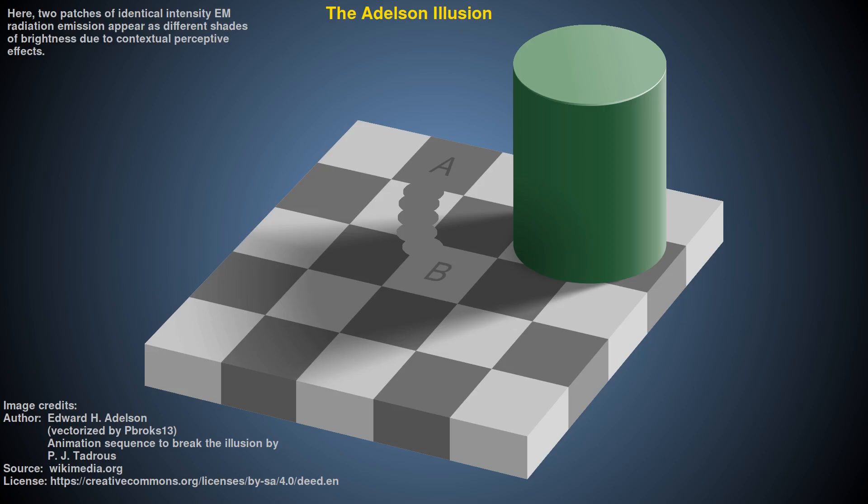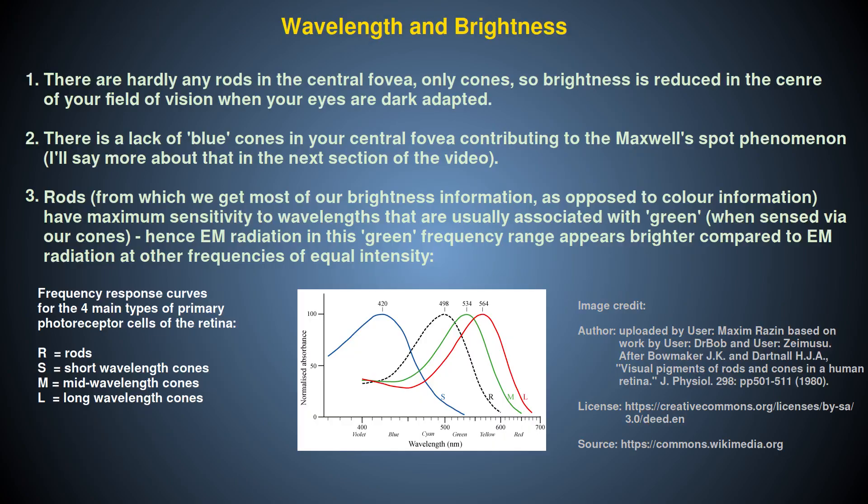This is a basis for many optical illusions, such as the Hermann or scintillating grid, which makes you think you see dark spots in the light areas between the squares, and the Adelson illusion, where two areas emitting exactly the same EM radiation intensity appear to be of significantly different brightness due to the context of their surroundings. Furthermore, perceived brightness depends on the concentration and proportions of retinal receptor cells, which differs across the visual field, and also on the wavelength of the incoming EM radiation — wavelength influences brightness too, not just colour.